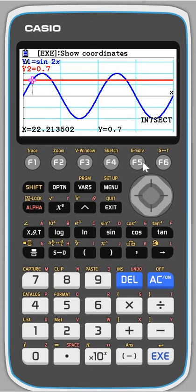And there's my first solution. I press the cursor along to get the next one, and so on. And so you can restrict the range on the x-axis so that you only see the correct set of solutions. Perfect. Thank you.